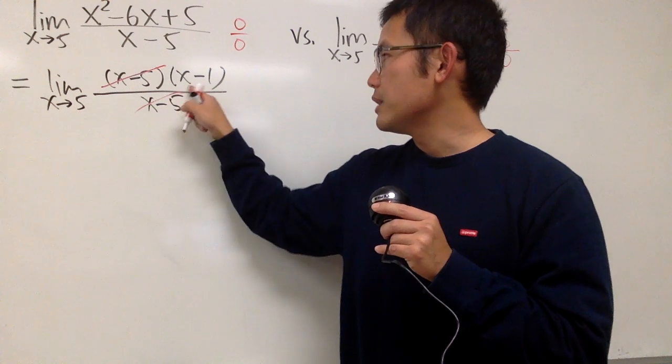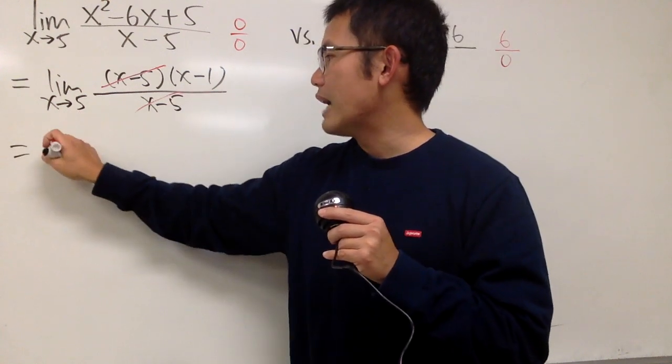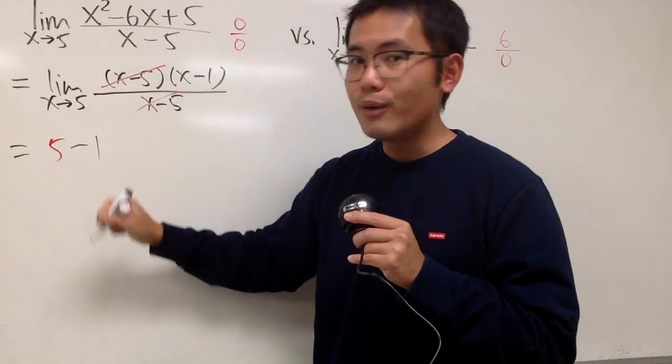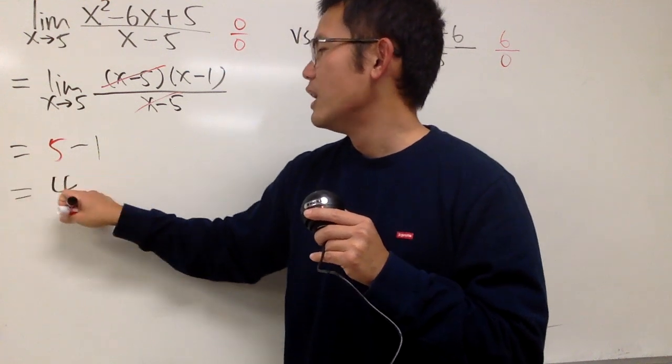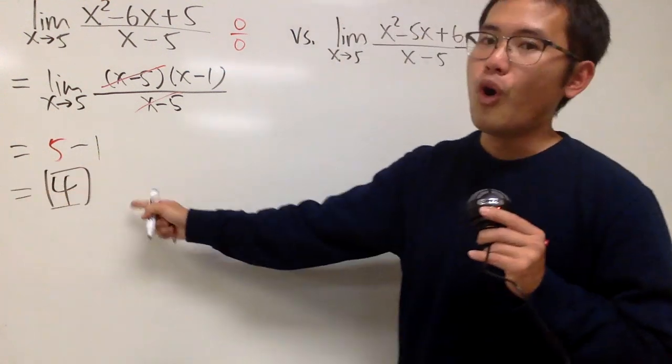And then just put the 5 in here. So we have 5-1 now. And of course, that's the nice number, which is going to be our nice answer: 4. That's it.